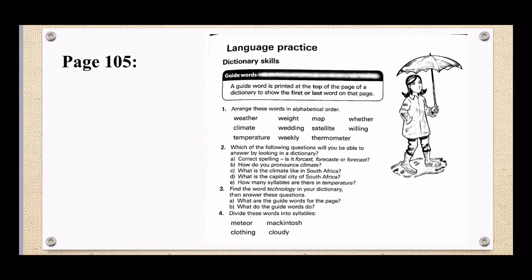You can open up your textbook on page 105. We're doing dictionary skills. I've gone through guide words already, and I'll just read through the questions. Number one: arrange these words in alphabetical order. Number two: which of the following questions will you be able to answer by looking in the dictionary? Number three: find the word 'technology' in your dictionary and then answer those questions. Number four: divide these words into syllables — you can use hyphens to divide them. Remember, clap your hands and you will find the syllables easier.